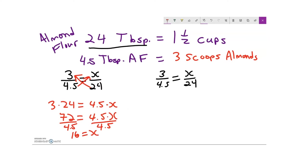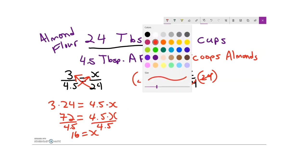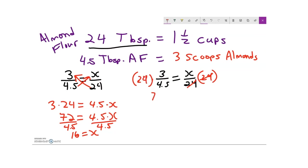And then the other way, which is actually the same thing, only you're looking at it like a two-step equation. In order to cancel out this 24, I've got to multiply both sides by 24. And then I would get, oh wait, I don't need to erase that there. I would still get 24 times 3 is 72 over 4.5. Again, equal to x. 72 divided by 4.5, that would give me again, 16 scoops of almonds for 24 tablespoons of almond flour. And that would be the number of scoops that Nick would need to use in order to make one and a half cups of almond flour.